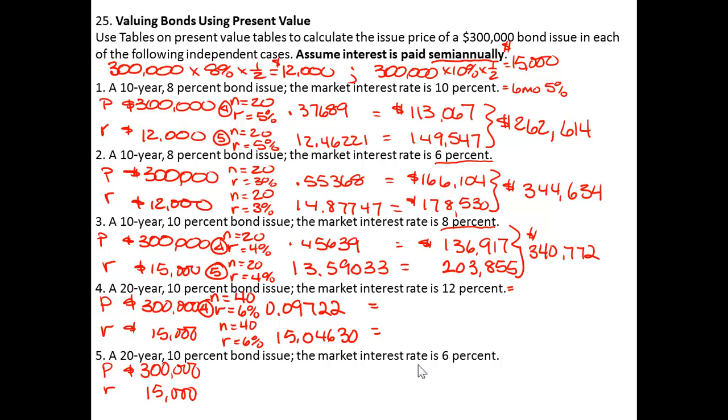So doing my math, $300,000 times the Table 4 value comes to $29,166. Quite a bit of difference. And for the Table 5 value, times $15,000 it comes to $203,855.